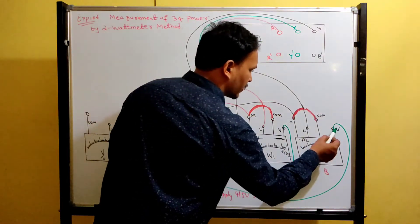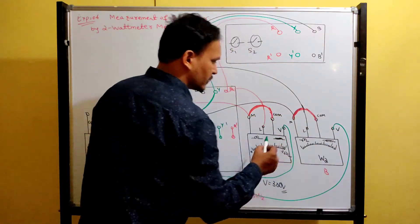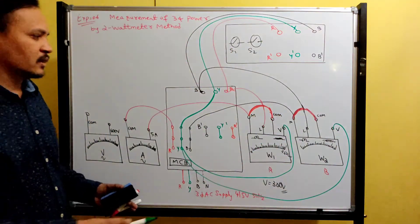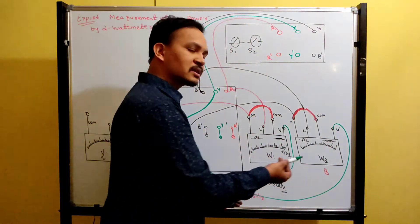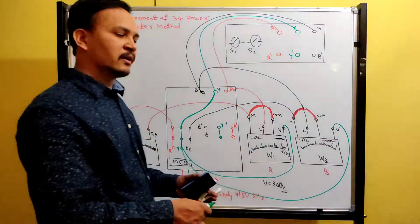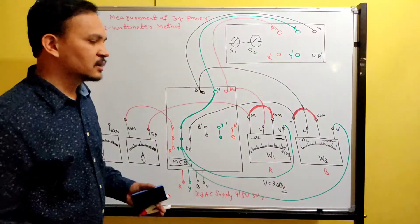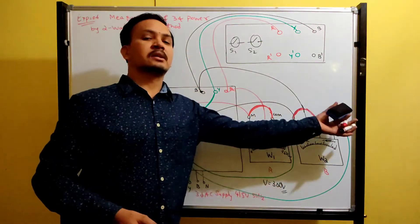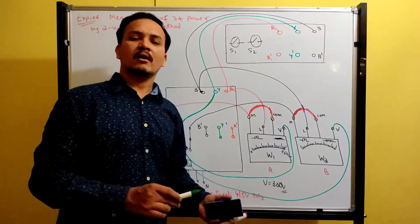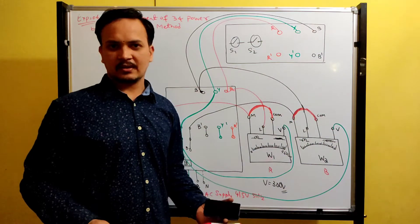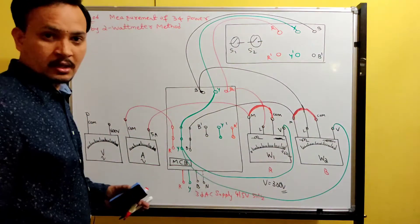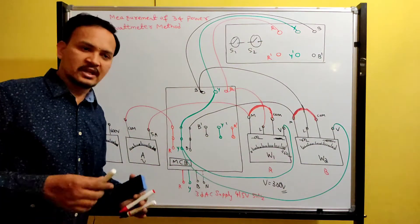Keep in mind: keep both V terminals in the same range. If the wattmeters have different full scale readings, you can take 300V on one and 600V on another — the multiplying constant will change accordingly.